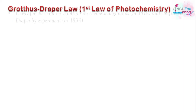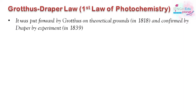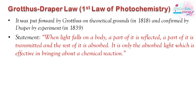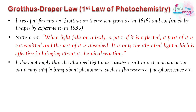The first law is the Grotthus-Draper law. The theoretical explanation was given by Grotthus in 1818, and it was confirmed experimentally in 1839 by Draper. His statement says that when light falls on a body, some parts are reflected or transmitted, and only the light that is absorbed will cause a chemical reaction.